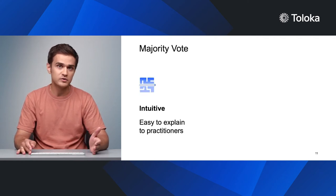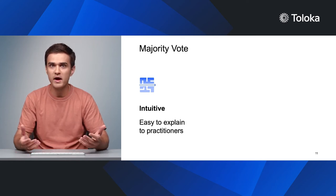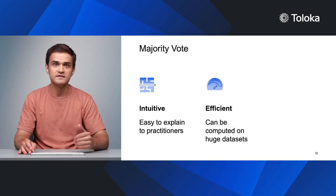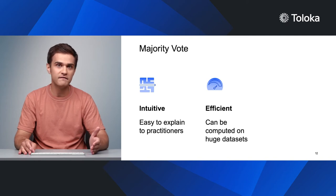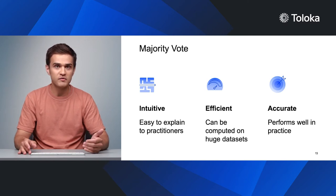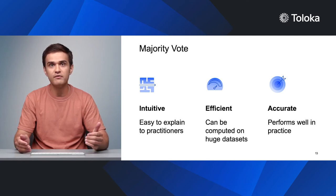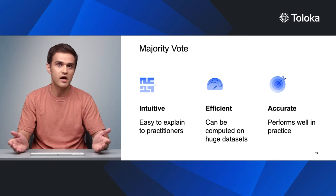In general, majority vote is a powerful tool. First, it's very intuitive — easy to explain to a practitioner even with no background in statistics. Second, it is very efficient: easy to implement and can be computed very fast even on huge datasets with parallel processing. Finally, it is often pretty accurate. We can use quality checks to filter out weak performers and smart motivation techniques to engage performers. Combined with these methods, majority vote often achieves reasonable accuracy without much additional effort from requesters.